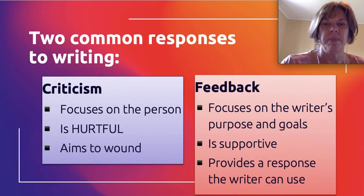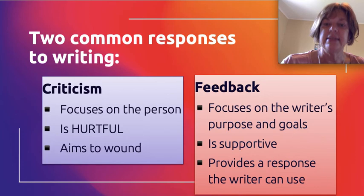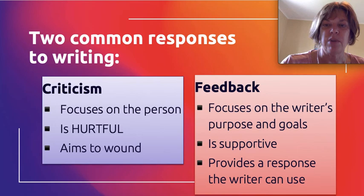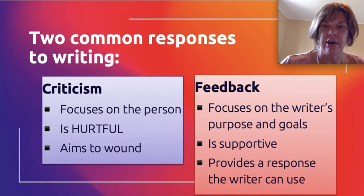Criticism focuses on the person — it's hurtful and it aims to wound. Feedback, on the other hand, is separate from the writer because you're focusing on the writer's intentions, purpose, and goals. It's supportive and it provides a response that the writer can use. For example, a writer might be trying to experiment with something new, and because it's a new way of writing, they may not be producing it the way they want just yet. If you give criticism to say 'this is terrible,' that's not going to be helpful for that writer.